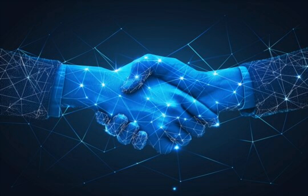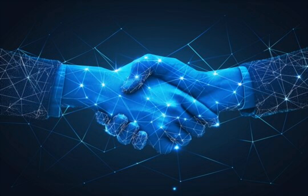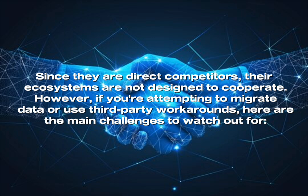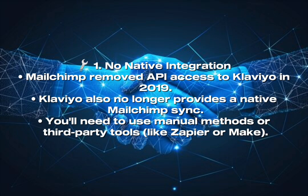Part 6: Challenges. Integrating Klaviyo with Mailchimp comes with several challenges, largely because there is no official or seamless integration between the two platforms. Since they are direct competitors, their ecosystems are not designed to cooperate. Challenge 1 — No Native Integration: Mailchimp removed API access to Klaviyo in 2019, and Klaviyo no longer provides a native Mailchimp sync. You'll need to use manual methods or third-party tools like Zapier or Make.